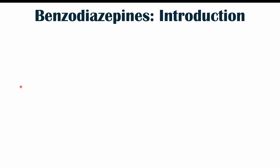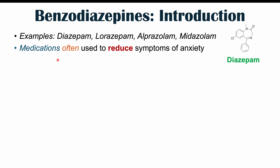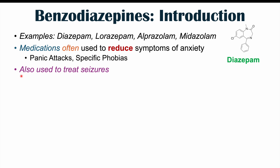Before we talk about the side effects, let's talk about some examples of benzodiazepines and how they work. Examples include diazepam, lorazepam, alprazolam, and midazolam. These medications are often used to reduce symptoms of anxiety, specifically for short-term anxiety in conditions like panic attacks and specific phobias. They're also used to treat seizure disorders.